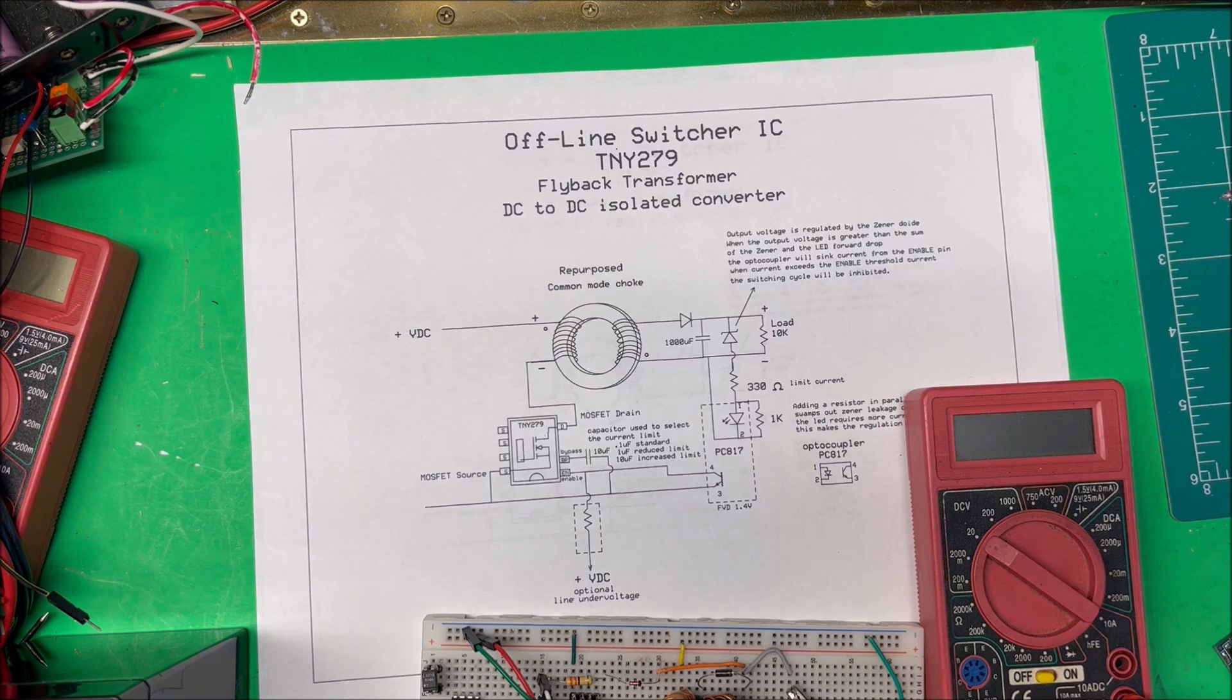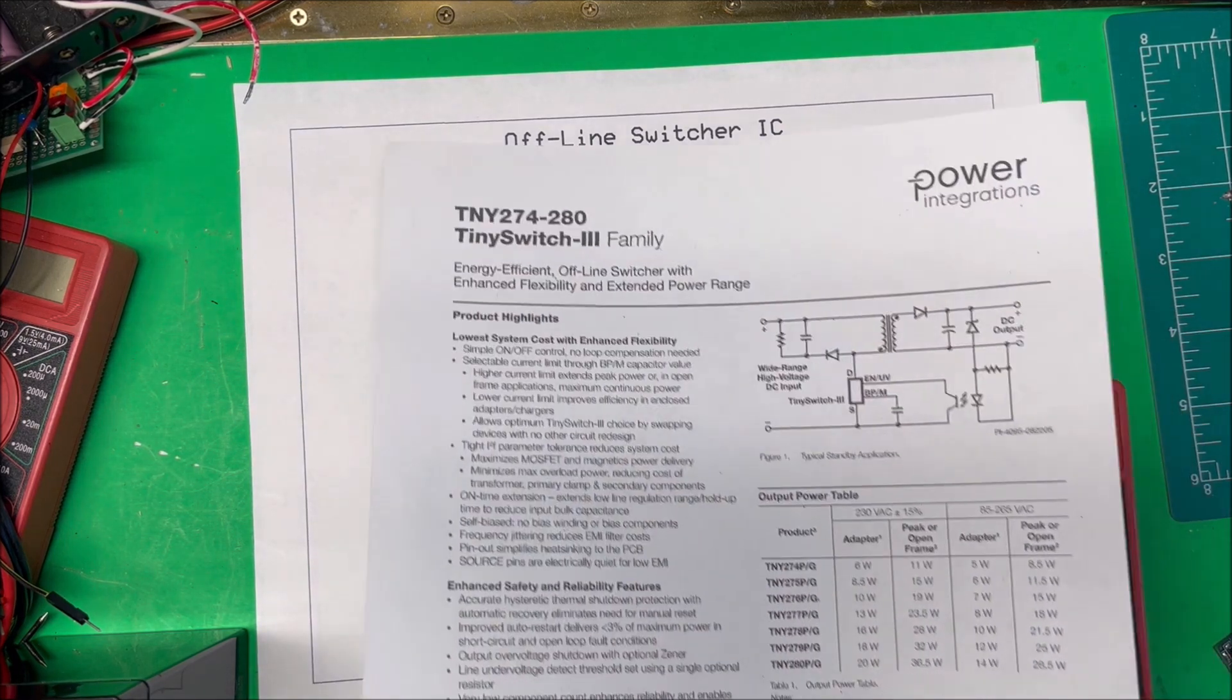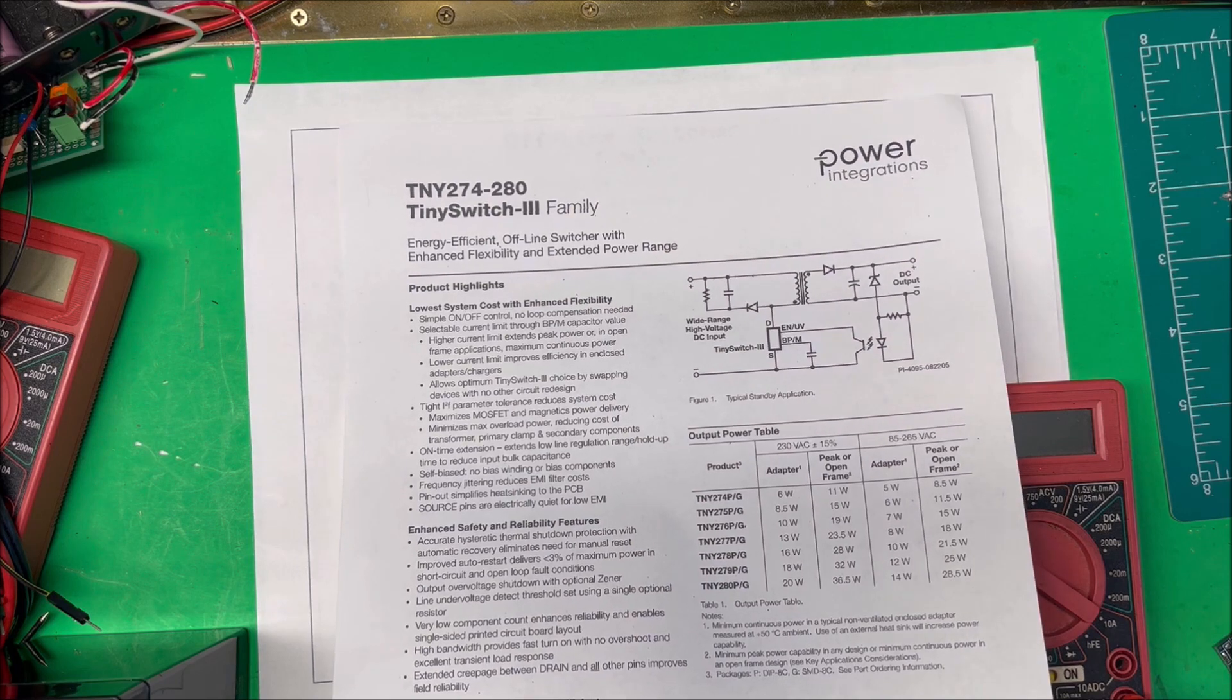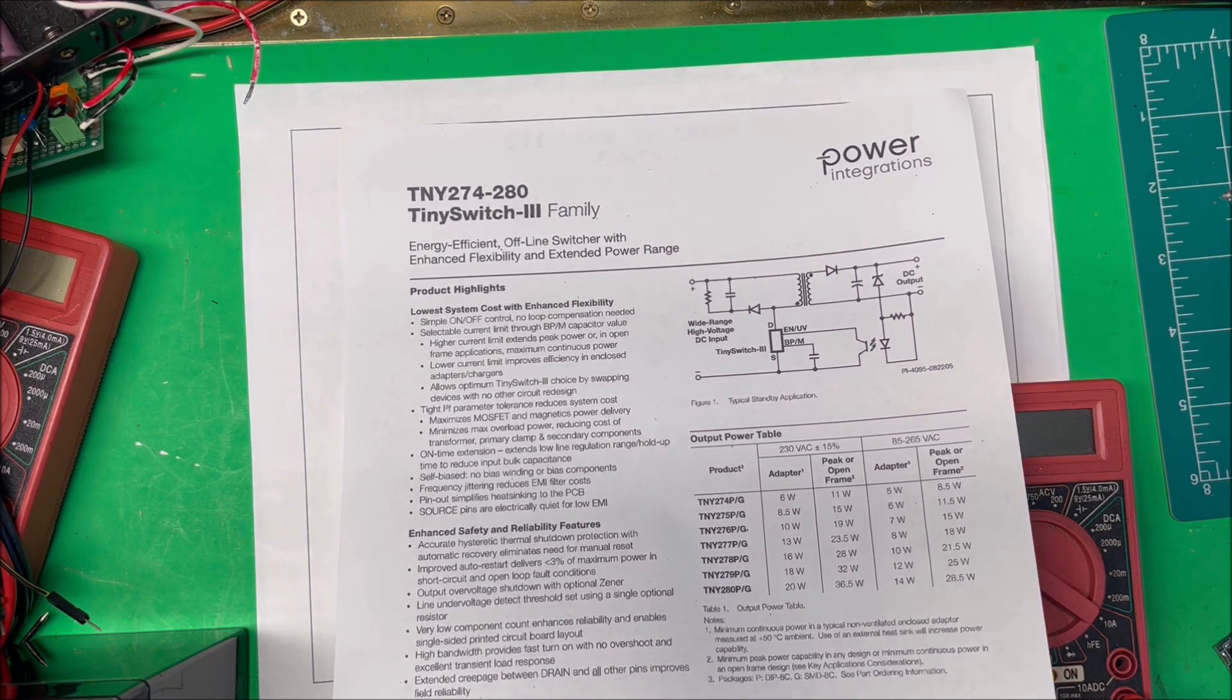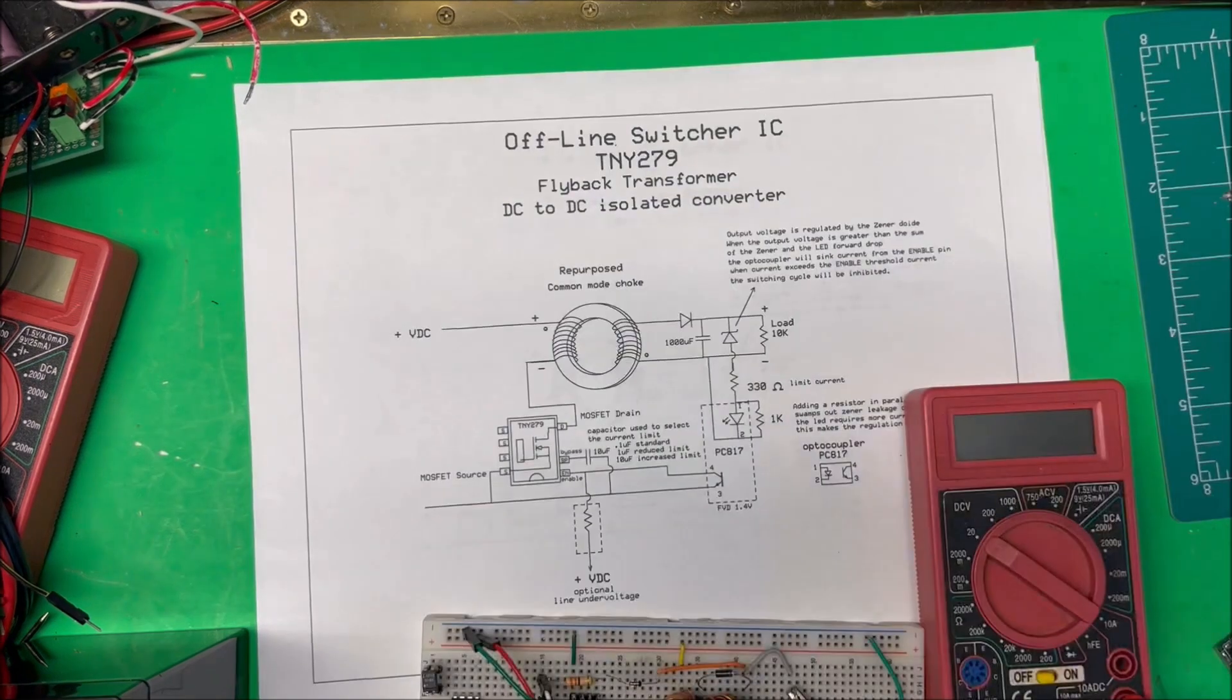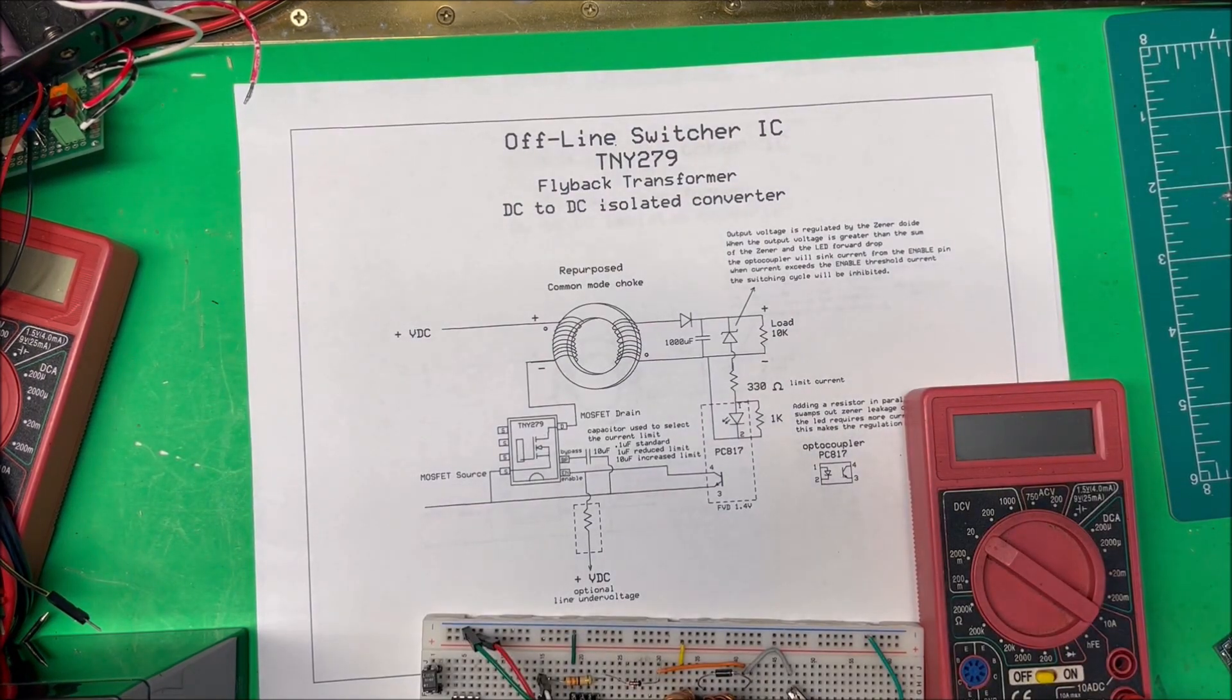Let's take a look at an offline switcher. I'm using a TNY279 - here's the data sheet for it. This one is good for a peak open frame wattage of 25 watts.